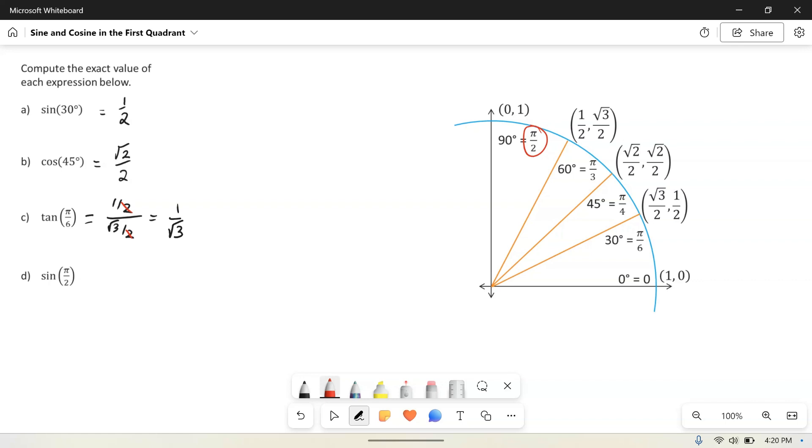So for sine, sine of pi over 2, remember we want to find the y coordinate. So sine of pi over 2 is 1.